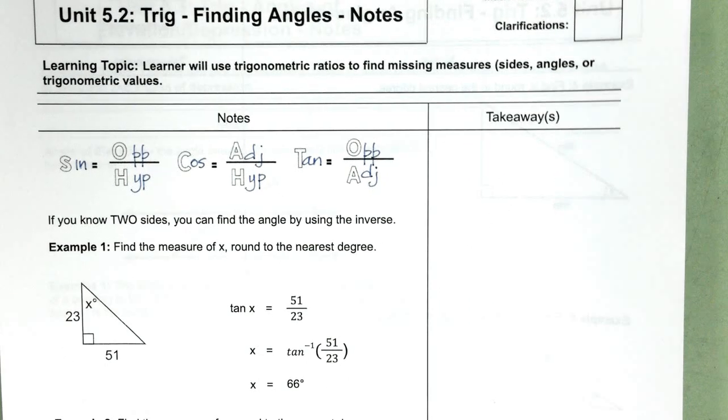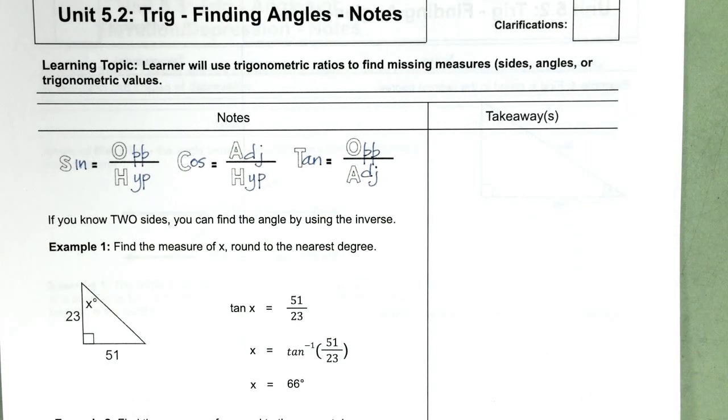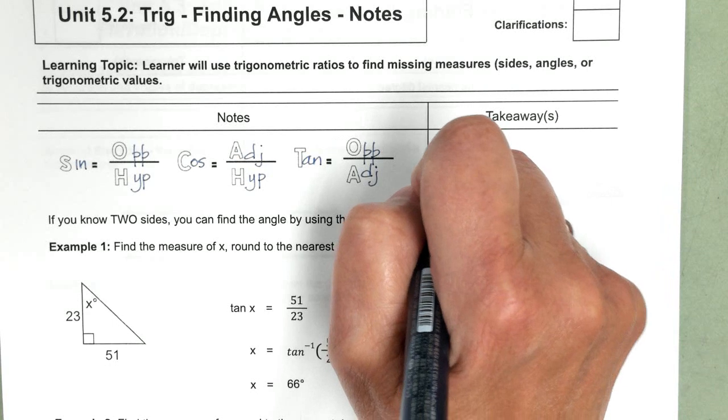So if you know two sides, you can find the angle by using the inverse trig function. So before we go on, I want to point something out to you.